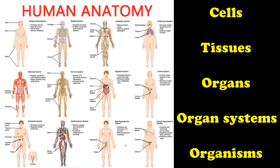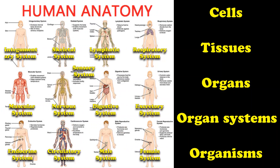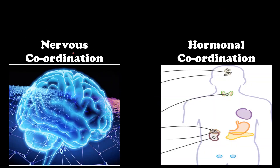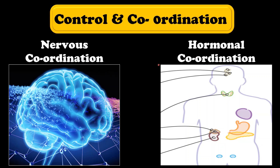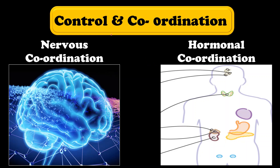So students, in case of human beings, these are the various systems present in our body and they perform various functions silently. These systems are directly or indirectly controlled by the nervous system as well as the endocrine system. In this video, we'll discuss about an interesting chapter — Control and Coordination — which mainly talks about nervous coordination and hormonal coordination.